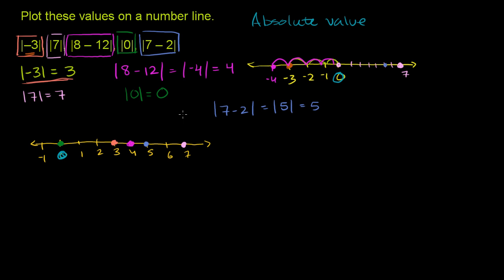So conceptually, absolute value is how far you are away from 0. But in simple terms: if it's a negative number, it becomes the positive version of it. If it's already a positive number, it just equals itself when you take the absolute value.